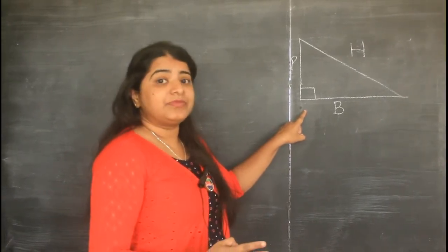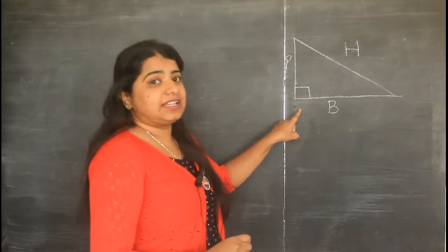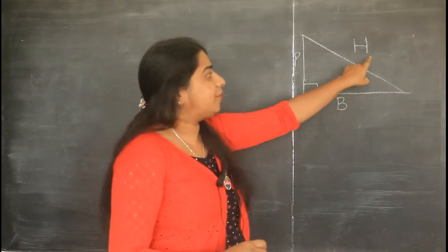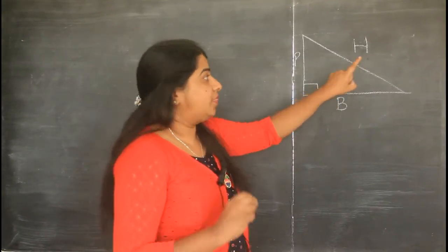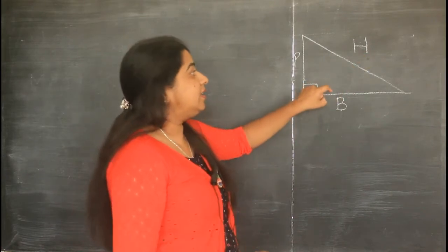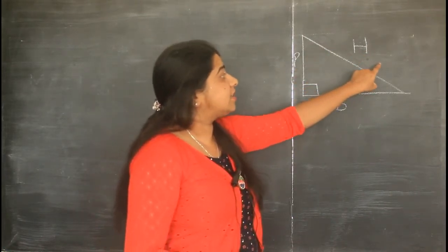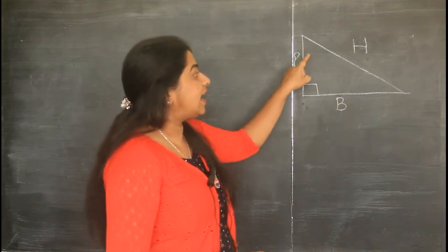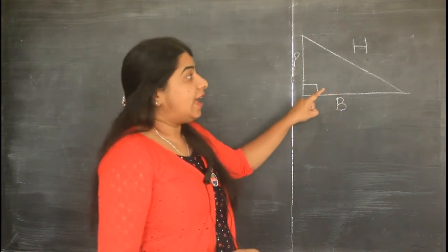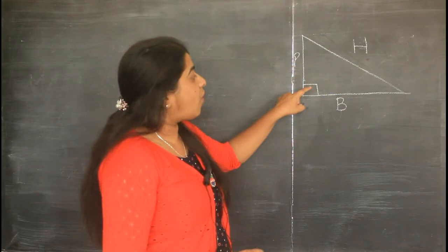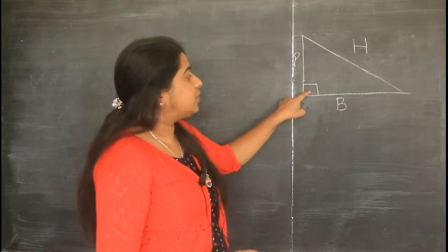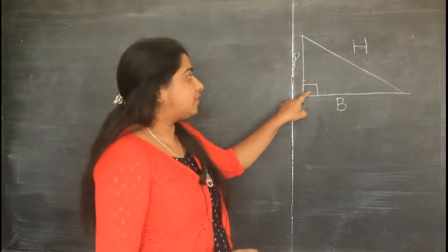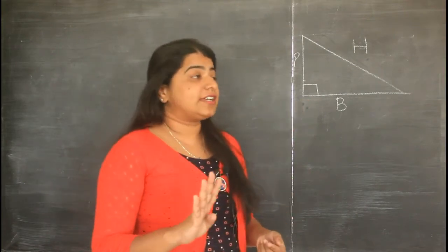Secondly, every right angle triangle has a perpendicular, base, and hypotenuse. Thirdly, the hypotenuse is considered to be the longest side of a right angled triangle. And fourthly, it is always opposite to 90 degrees. So remember these four takeaways.